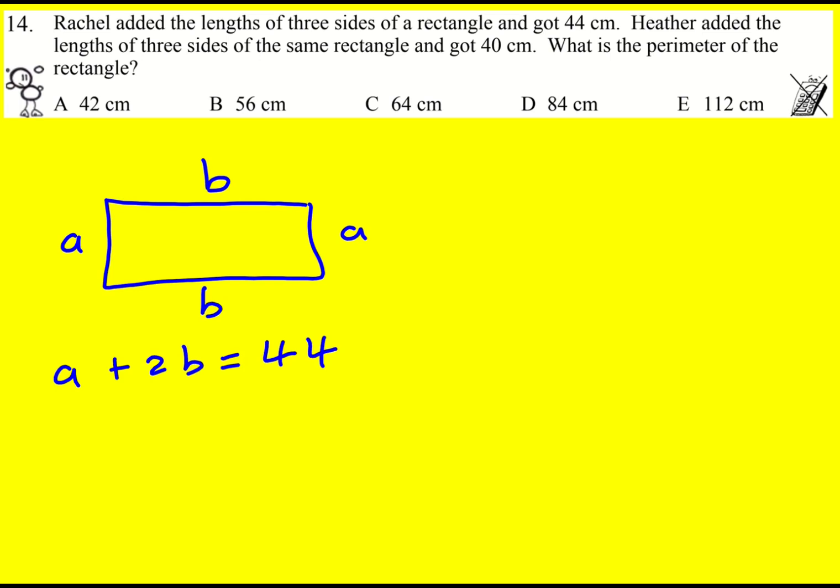And then Heather added the lengths of three sides of the same rectangle, got 40. So she must have added the two shorter sides. 2A plus B equals 40.